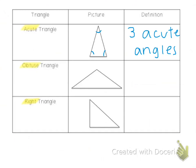An obtuse triangle is a triangle with one obtuse angle. An acute triangle has to have all the angles acute, whereas an obtuse triangle will just have one angle that's obtuse and the other two angles are going to be acute.